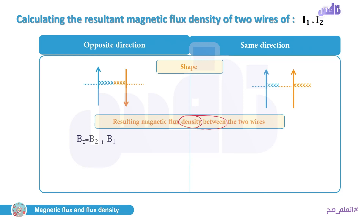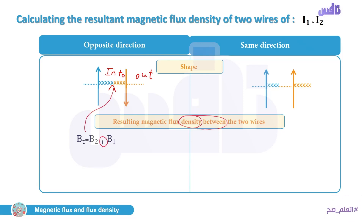For opposite-direction currents: between the two wires both fields have the same direction, so B_total = B₁ + B₂. Outside the two wires the directions are different, so B_total = B_large − B_small.